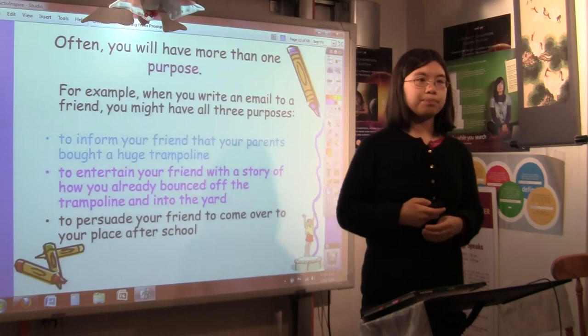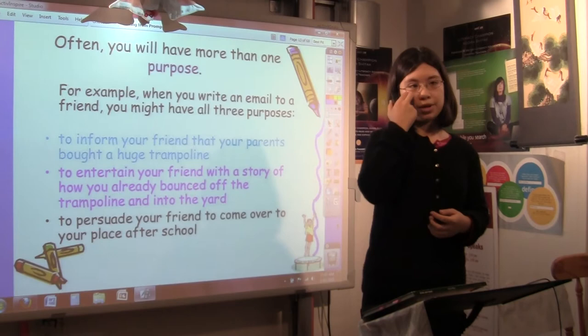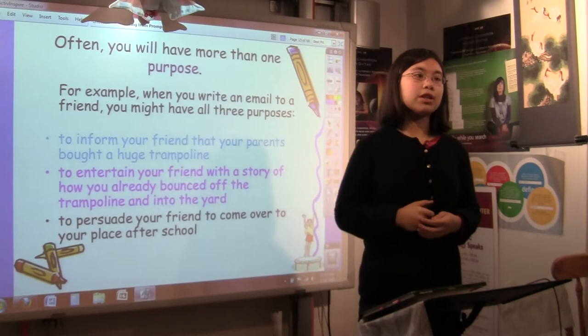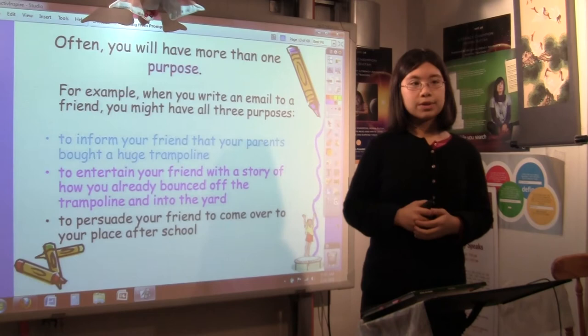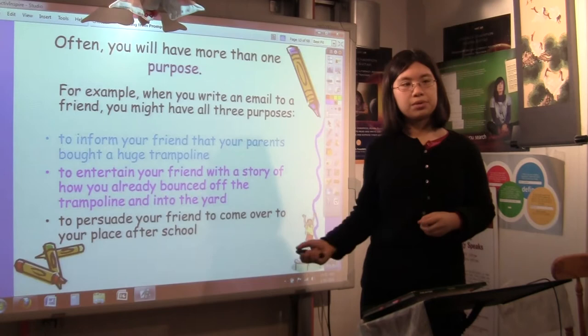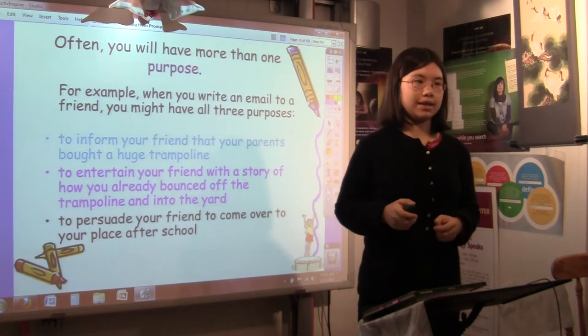Sometimes, and oftentimes in life, you'll have more than one purpose. Like when you write an email to a friend, you might have all three purposes. To inform your friend that your parents just bought a huge trampoline. To tell a story or entertain your friend with how you already bounced off the trampoline and into the yard. And then to persuade your friend to come over to your place after school. So without thinking about it, we use all these things like expository writing, persuasive writing, and narrative writing all the time. We just don't put that label on it.